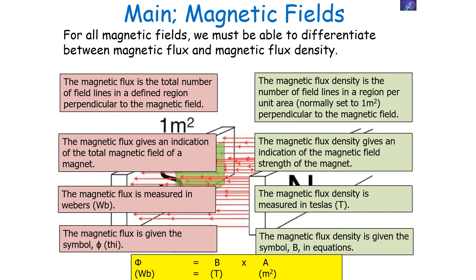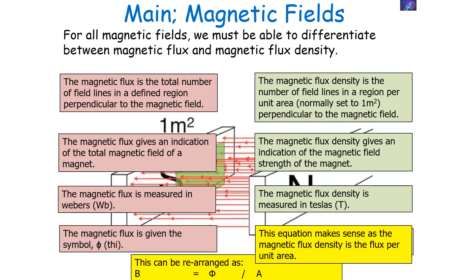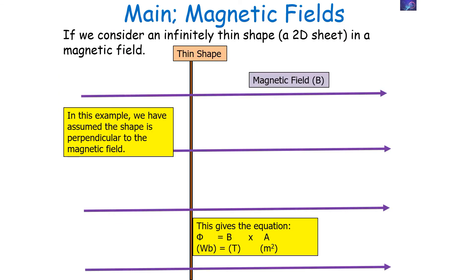We can rearrange this and make magnetic flux density, B, the subject: B = Φ/A, and this equation makes sense as the magnetic flux density is the flux per unit area. If we consider an infinitely thin shape, such as a 2D sheet in a magnetic field, and assume this shape to be perpendicular to the magnetic field, we can work out Φ — the magnetic flux — by doing the flux density times the area.